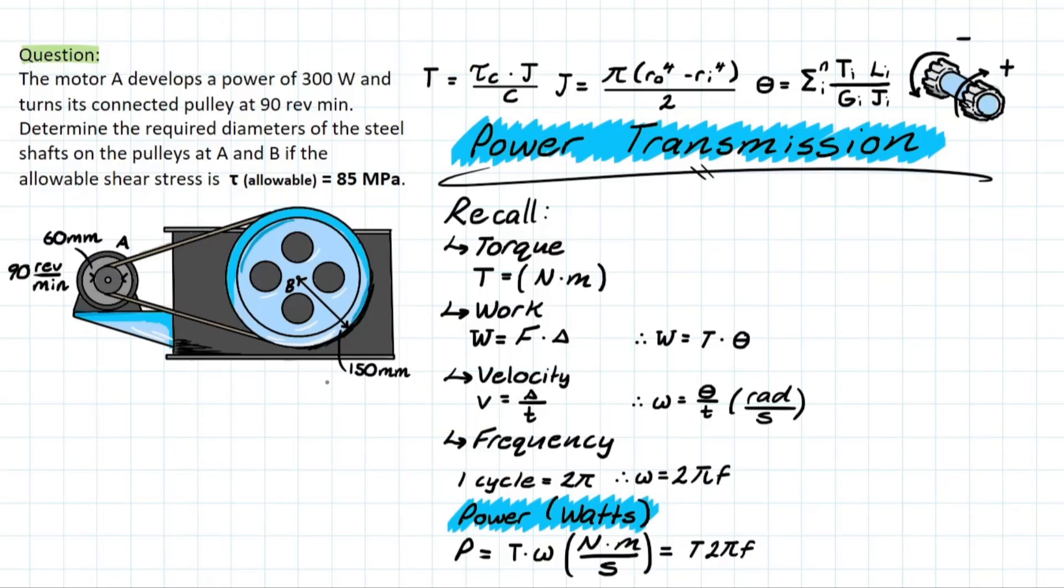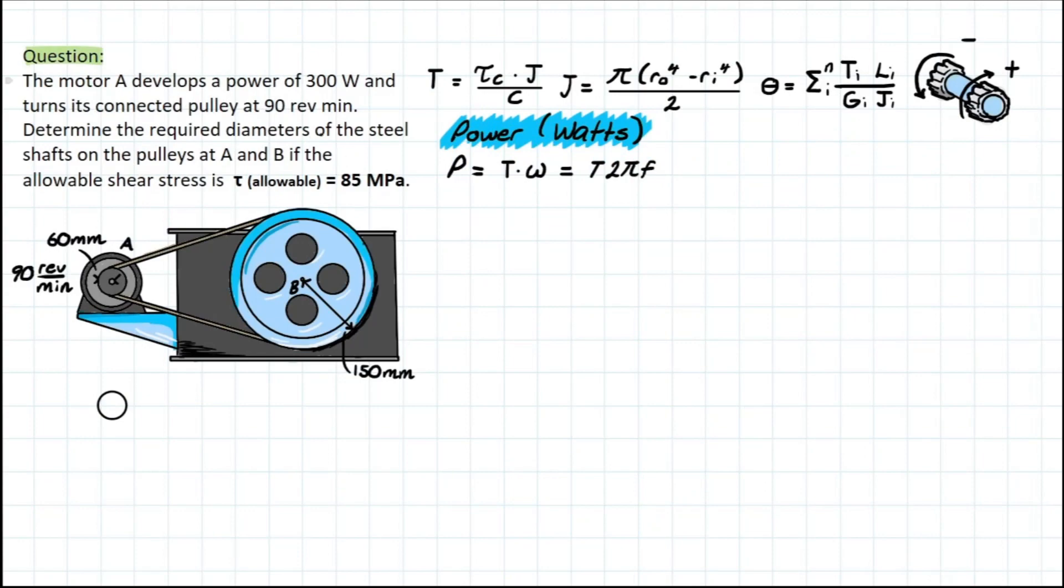So let's hop in and see what we're dealing with. All right, so let's go ahead and solve this problem. And the problem is as follows. The motor A develops a power of 300 watts and turns its connected pulley at 90 revolutions per minute. And the problem is asking us to determine the required diameters of the steel shafts that are connecting the pulleys at A and B such that the allowable shear stress in these shafts is equal to 85 MPa at a maximum.